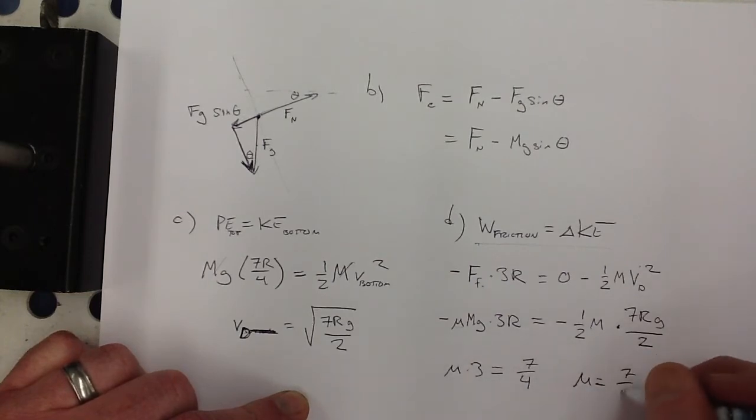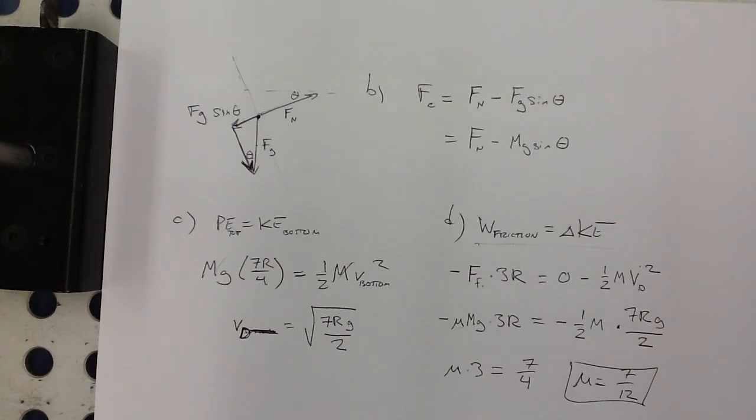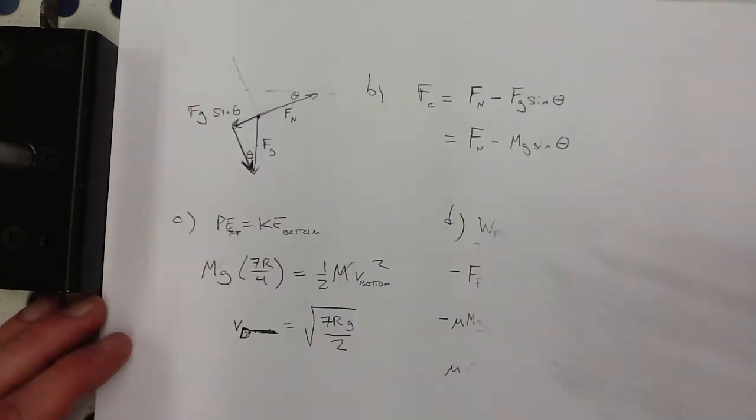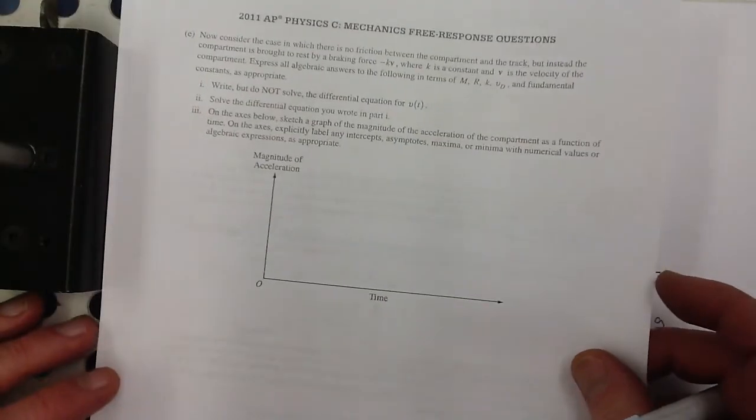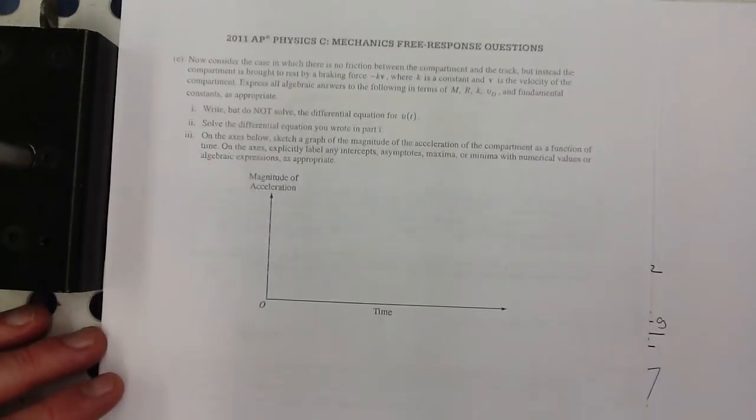Divide by 3. So, mu is 7 over 12. All right. Last part. Maybe I'll do that on here, since I've got some room down here and there's a graph.